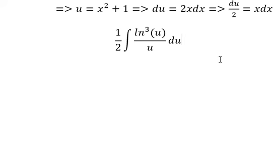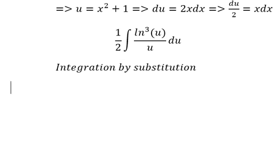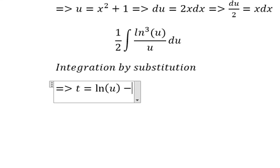Next, we will use integration by substitution again. In this situation, we will use t equals logarithmic base e of u. So we have dt equals du over u.